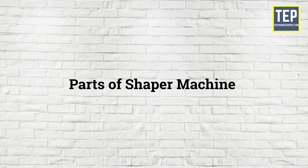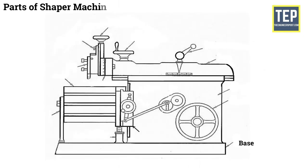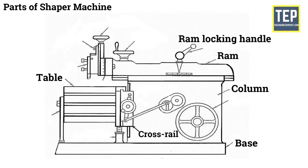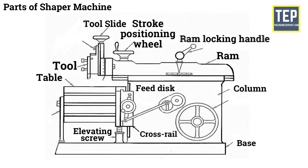Parts of Shaper Machine: The main parts of Shaper Machine are Base, Column, Cross Rail, Table, RAM, RAM Locking Handle, Stroke Positioning Wheel, Tool, Tool Slide, Feed Disc, and Elevating Screw.